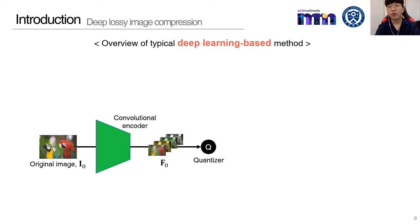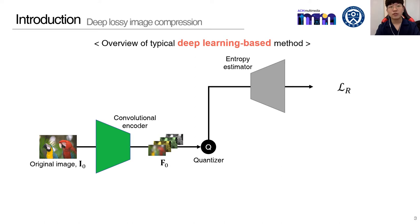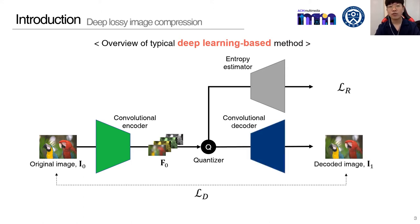First, the convolutional encoder transforms an original image into latent features. After the quantization, they go through two paths. First, through the entropy estimator, the model defines a loss function related to compression rate. The convolutional decoder reconstructs the image, where a distortion-related loss function is defined. Finally, the total loss function is defined using these two loss terms.